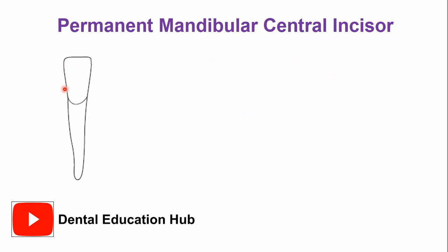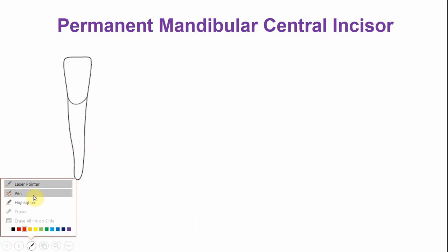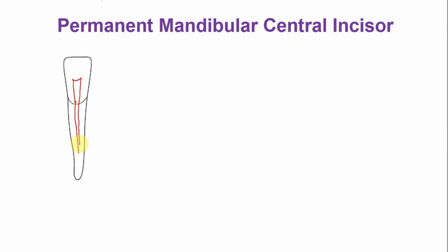This is a mesiodistal outline of the permanent mandibular central incisor. The pulp chamber is narrow, comprising one to two pulp horns, and it is very narrow. The tooth has a single root canal with a gradual taper towards the root apex. Usually the apical foramen is at the tip of the root, but sometimes it opens towards the mesial side or towards the distal side.